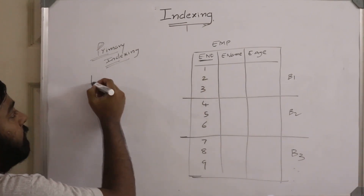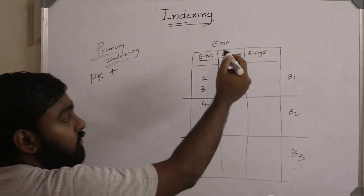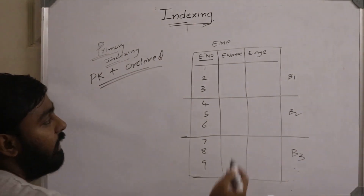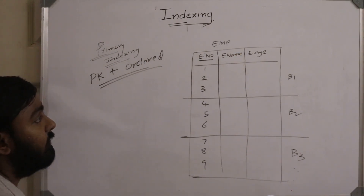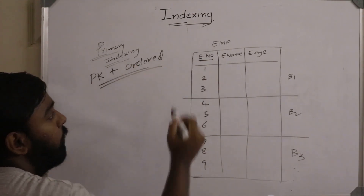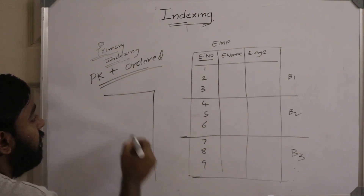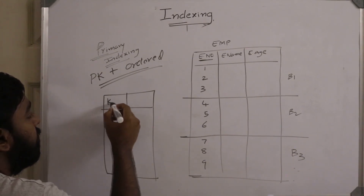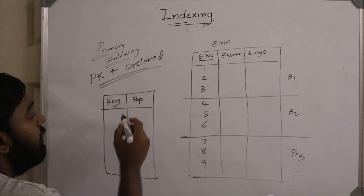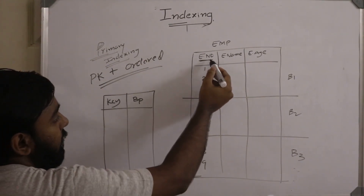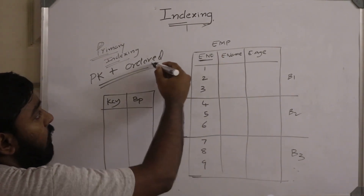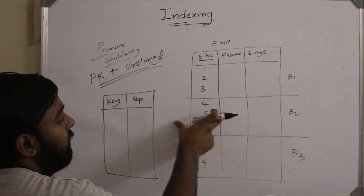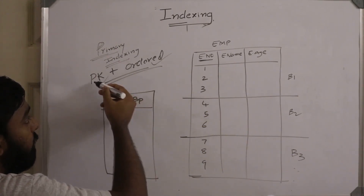The data file must also be in ordered fashion. Now let's take a data file which consists of employee records and construct a primary index for these employee records. A primary index is like a regular index which consists of two fields: key and block pointer. Here the key must refer to the primary key, and the data file must be in ordered fashion.